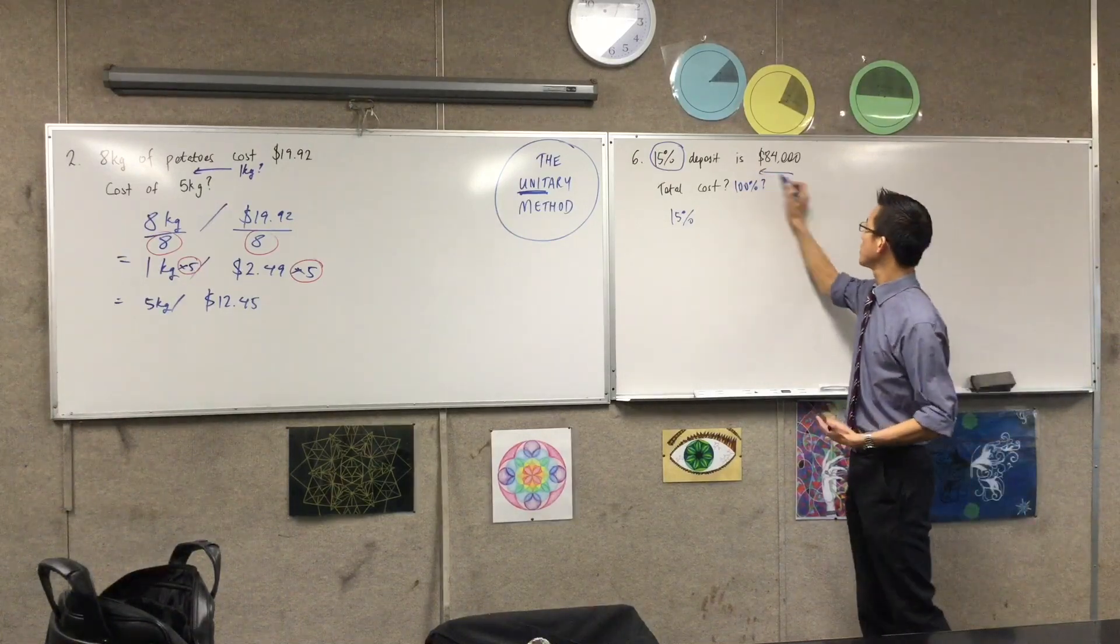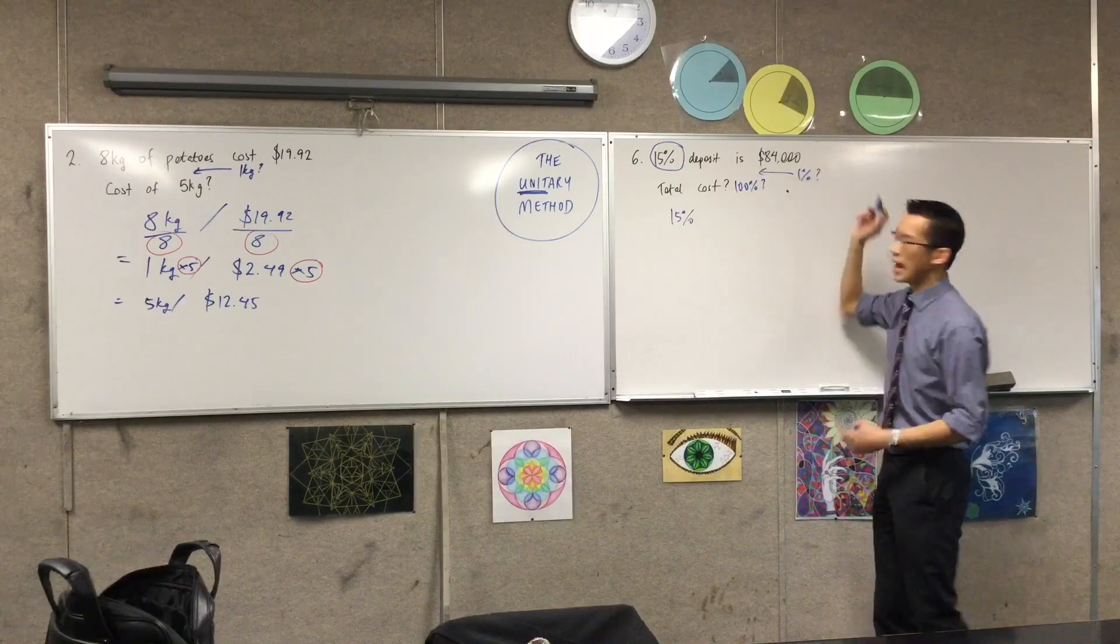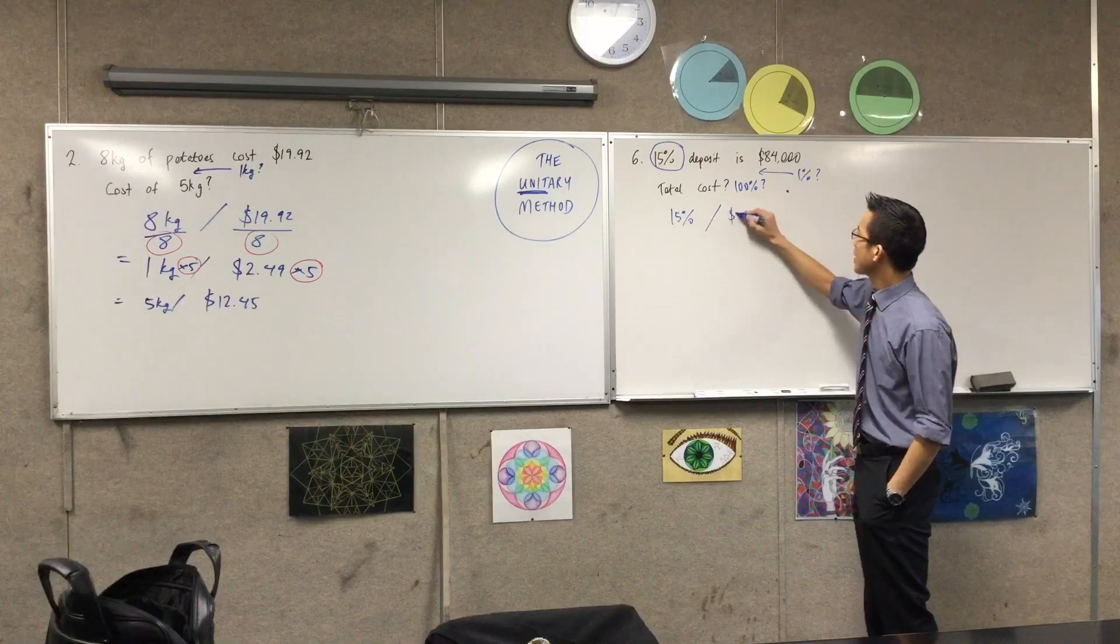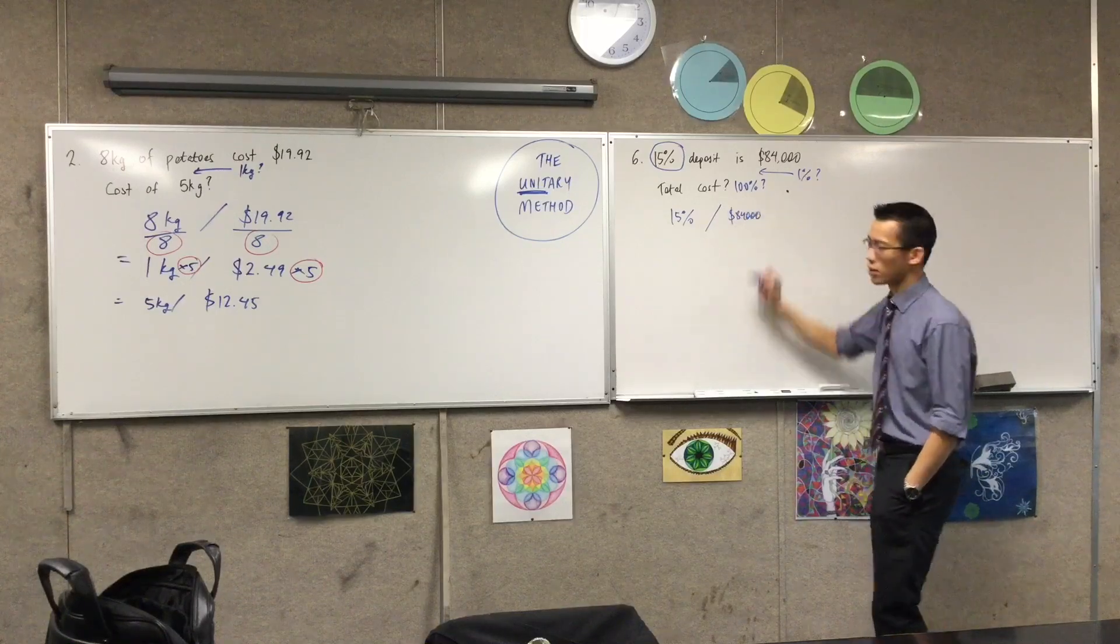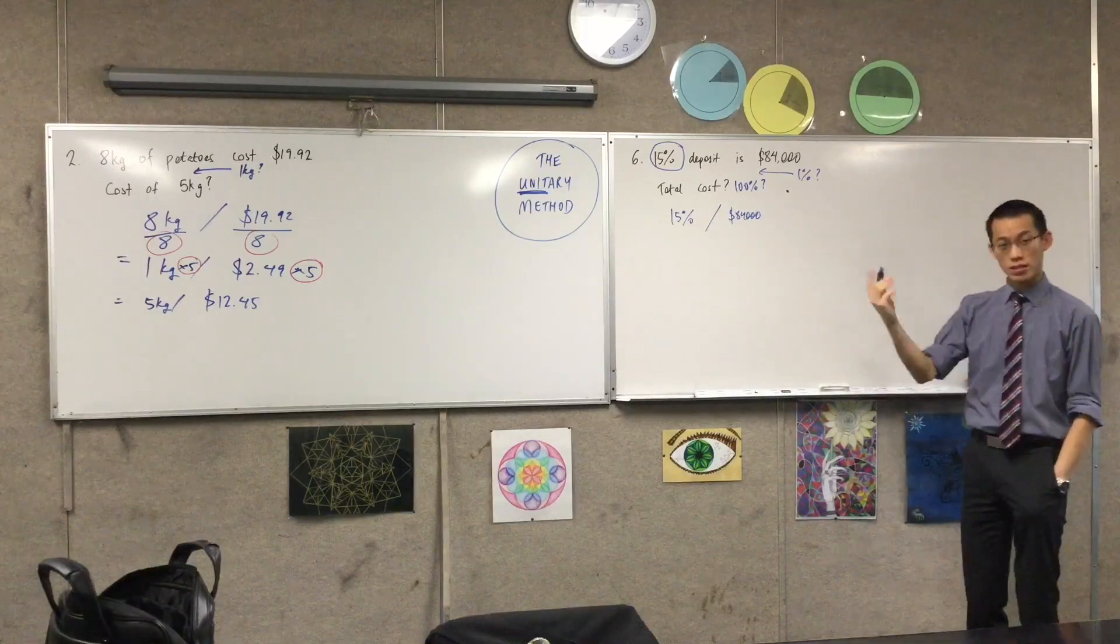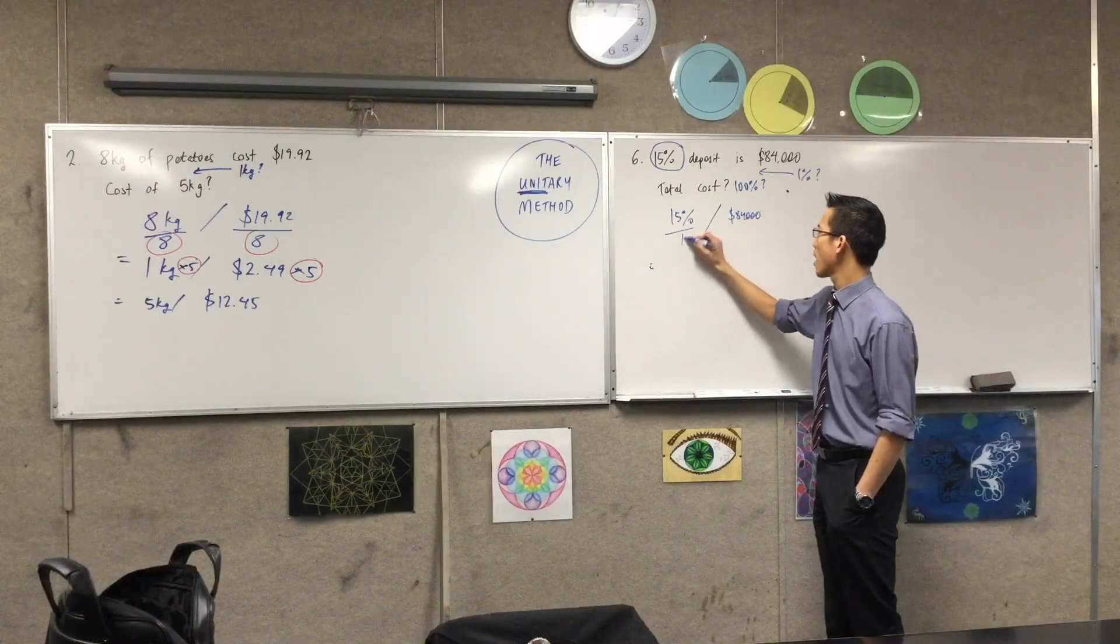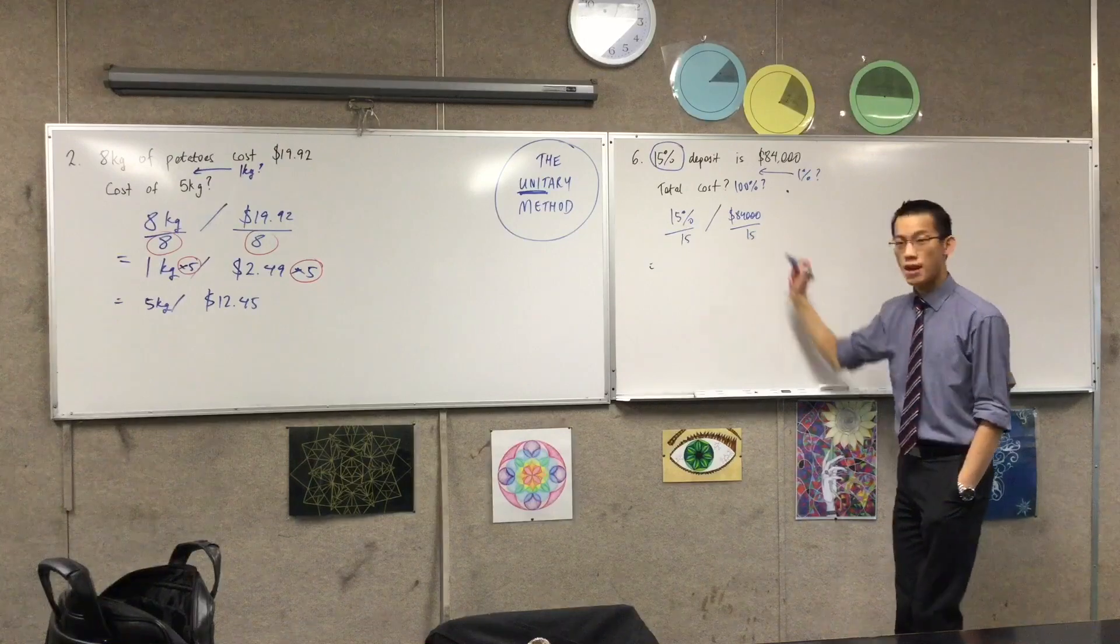So again, the intermediate question is, well, what's 1%? And then I can get to 100 from there. So 15% is $84,000, right? Just like before, I want to get to a single unit. So I'm going to divide both of these quantities by 15.